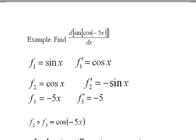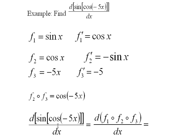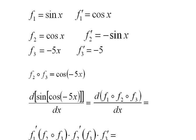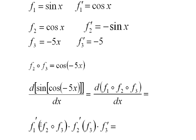Now, we can use our formula. Our formula would say that the derivative of the sine of the cosine of negative 5x is the derivative of f1 of f2 of f3. And this would be f1 prime with the composite of f2 and f3 inside, times f prime 2 of f3, and then just f prime of 3. Just a shorter version of the four function rule that we had above.